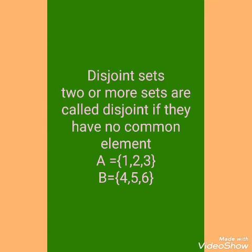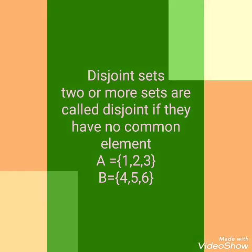Next one is Disjoint set. Two or more sets are called disjoint if they have no common element. Here you can see we have two sets A and B. Both have 3 elements each, but there is no common element between the two sets. A has 1, 2, 3 and B has 4, 5, 6. Both have 3 elements, but no common element, so they are disjoint sets.